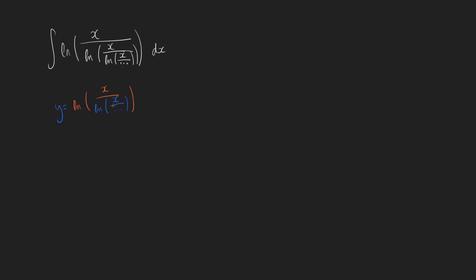Notice that the expression in blue is actually exactly equal to the red stuff, since it's infinitely nested, and we've set this equal to y, which means y is equal to the stuff in blue. So y equals the natural log of x over y. We can exponentiate both sides to get e to the y equals x over y — notice that the natural log cancels out with the e. If we then multiply by y, we get y times e to the y equals x. There's no real way to isolate y, so we'll have to use the Lambert W function.